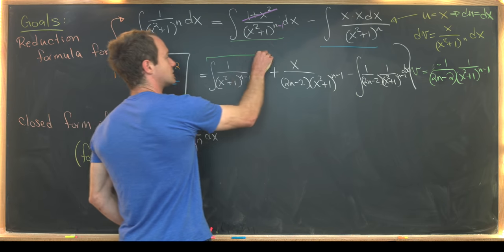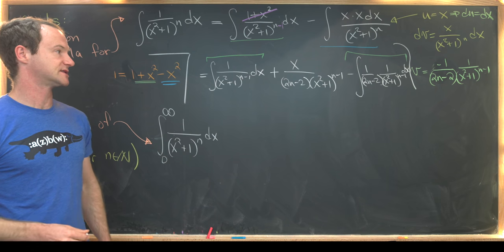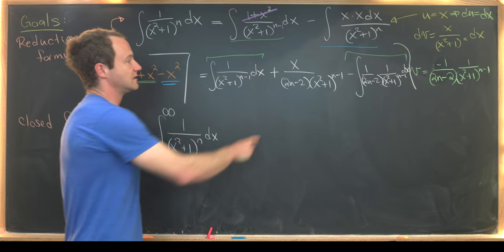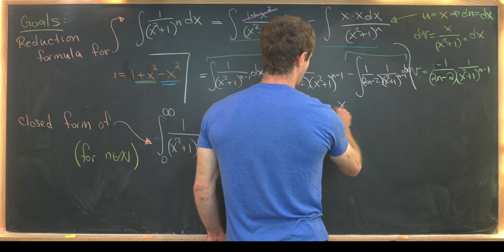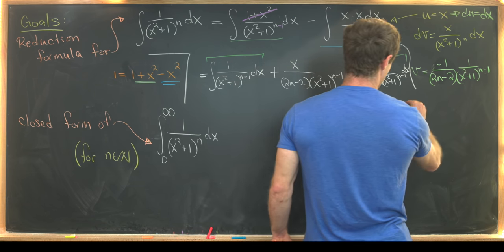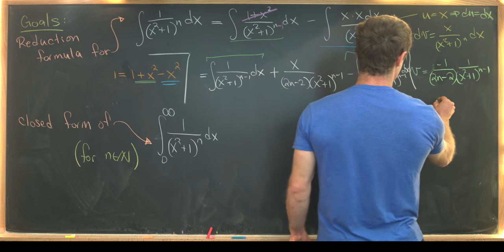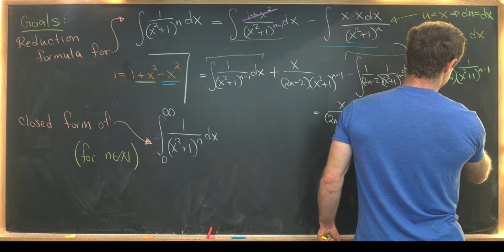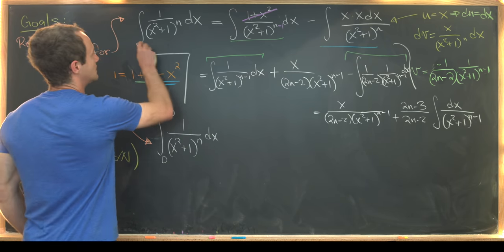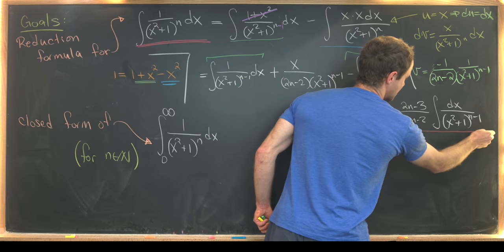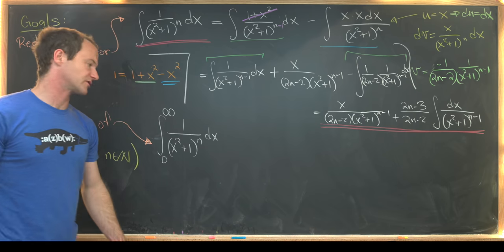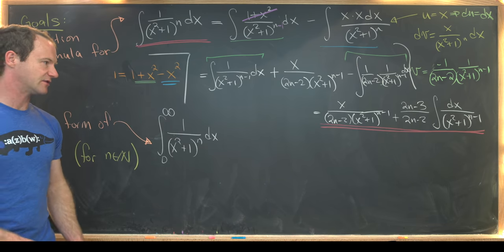These two integrals are essentially the same up to a constant, so we can combine them, giving a common denominator of 2n minus 2. In the end, we have x over 2n minus 2 times x squared plus 1 to the n minus 1, plus 2n minus 3 over 2n minus 2 times the integral of 1 over x squared plus 1 to the n minus 1. Looking at the left-hand and right-hand sides, we see a nice way of writing the nth integral in terms of the n minus 1st integral.